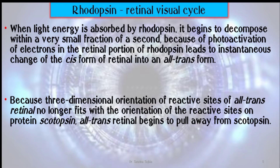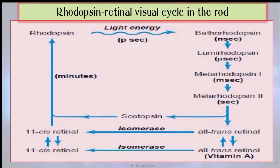When light energy is absorbed by rhodopsin, it begins to decompose within a very small fraction of a second because of photoactivation of electrons in the retinal portion of rhodopsin. This leads to an instantaneous change of the cis form of retinal into all-trans form, because the three-dimensional orientation of the reactive side of all-trans retinal no longer fits with the orientation of reactive sides on the protein scotopsin. All-trans retinal then begins to pull away from scotopsin.